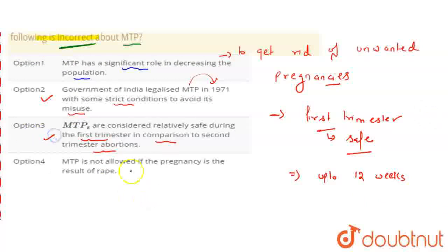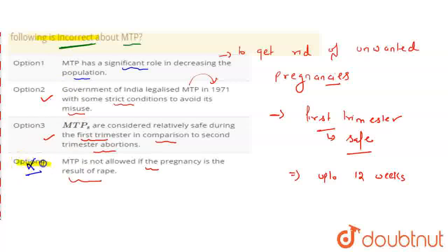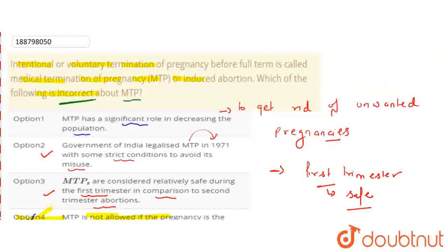This statement is not allowed if the pregnancy is the result of rape — so this statement is wrong. Unwanted pregnancy can be the result of rape. So the fourth option is the correct option.